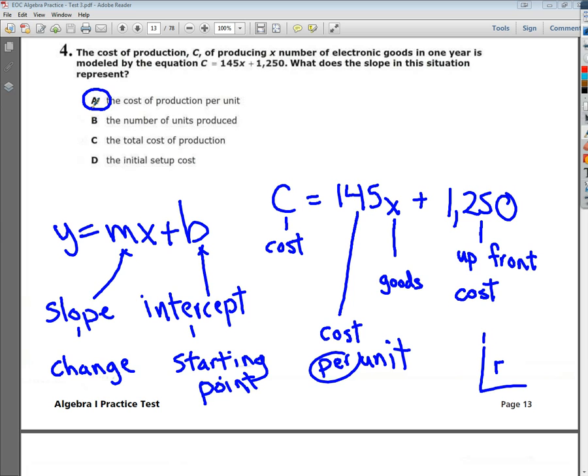The total cost of production, they've already identified as C, and the initial setup cost, we talked about being that thing at the end, that's the upfront cost. So the answer to number four is A.